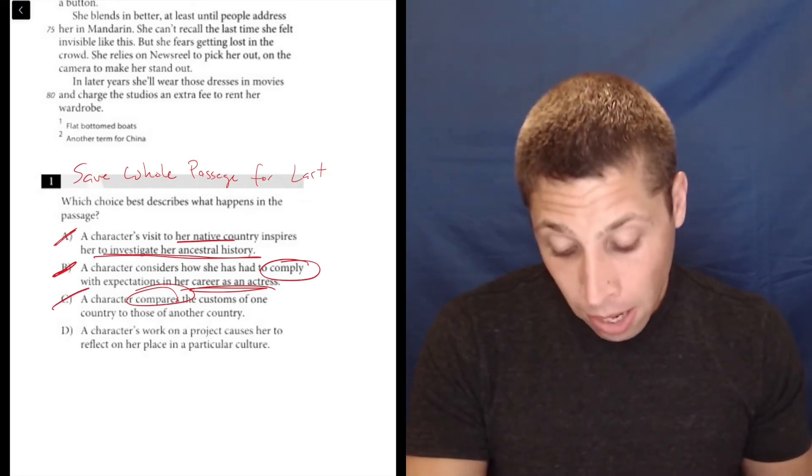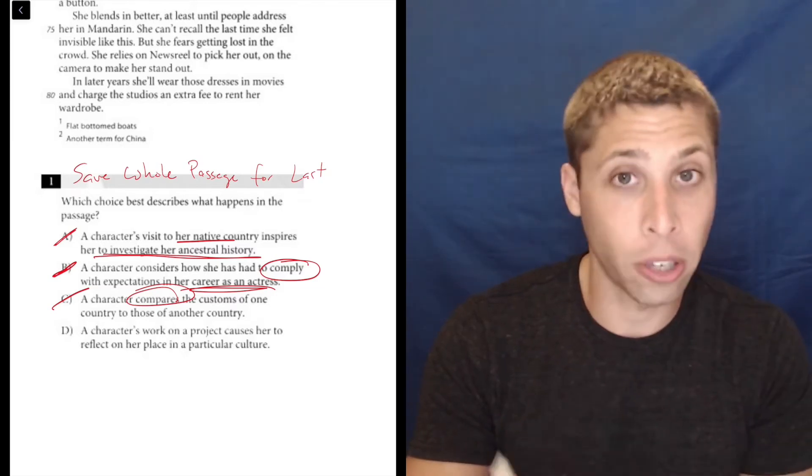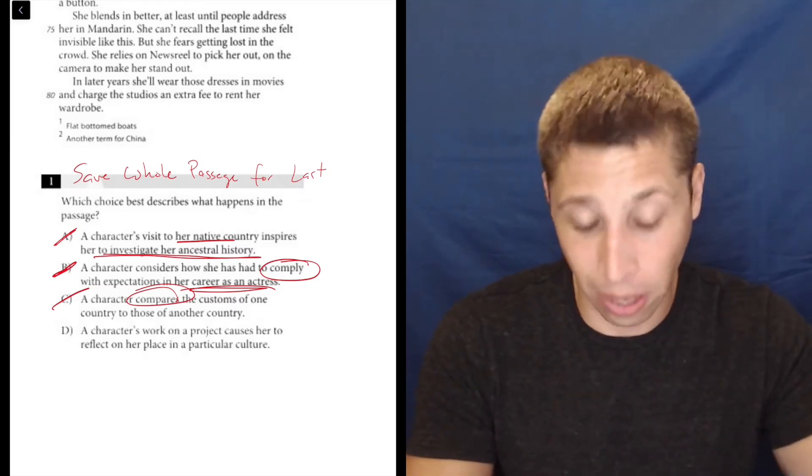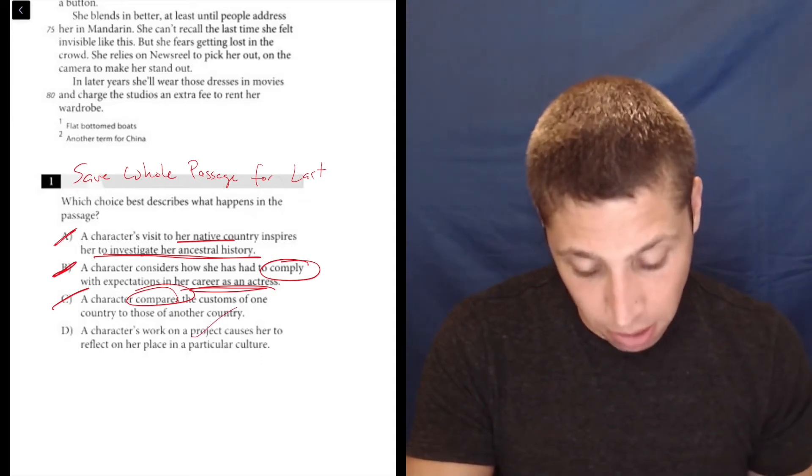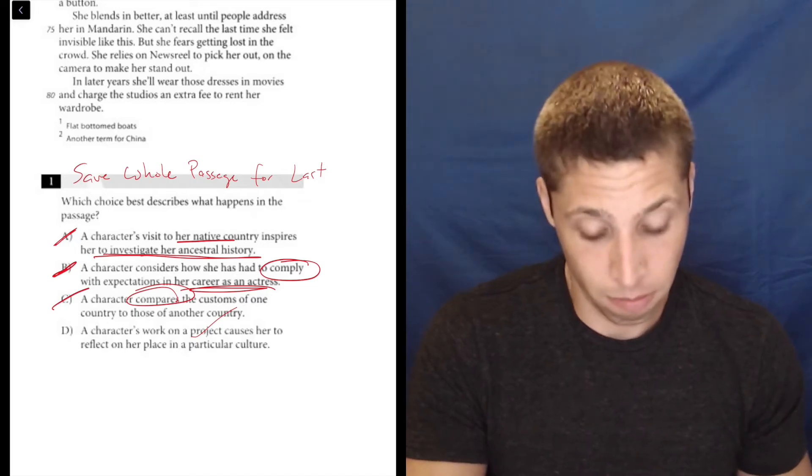So that leaves us with D. A character's work on a project causes her to reflect on her place in a particular culture. So is there a project? Yeah. She's over there to take pictures for some promotional thing. Yes. So there is a project. Does she reflect on her place in a particular culture? Well, what's the culture? China. That's where she is and she's got Chinese heritage.